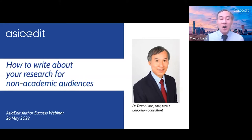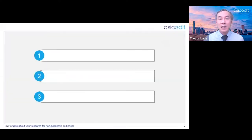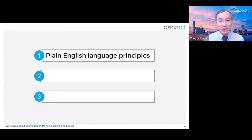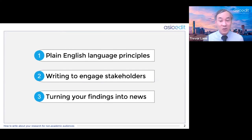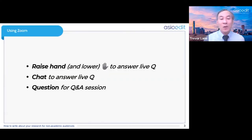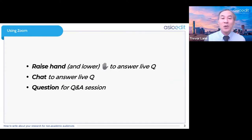This webinar follows an earlier introductory webinar on how to effectively communicate and promote your research, so do check that out on the Asia Edit website afterwards. In this hour we'll be looking specifically at non-academic writing to convert your research articles into news, covering plain language principles, keeping non-academic audiences engaged, and top tips for converting research findings into news. The final 10 minutes will be reserved for a Q&A session. During the webinar, please raise your virtual hand when I ask live questions, or type answers into the chat box. For the Q&A, please type questions in the question box so they don't scroll up and disappear.